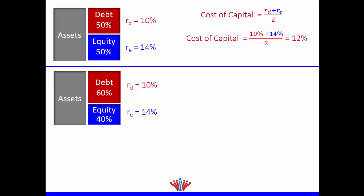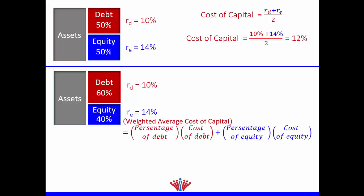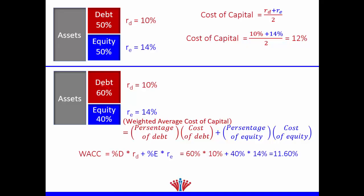Because we have different weights, instead of a simple average we need the weighted average — that's why we call it the Weighted Average Cost of Capital, or WACC. WACC equals the percentage of debt multiplied by the cost of debt, plus the percentage of equity multiplied by the cost of equity. So: 60% × 10% + 40% × 14% = 11.6%.